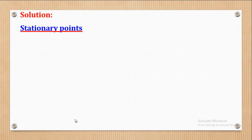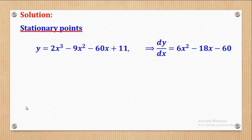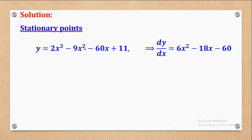The first thing is to find the stationary points. To get stationary points, you have to first get the first derivative. So, dy/dx: differentiating 2x³ gives 6x²; differentiating −9x² gives −18x; differentiating −60x gives −60; and differentiating the constant 11 gives 0.